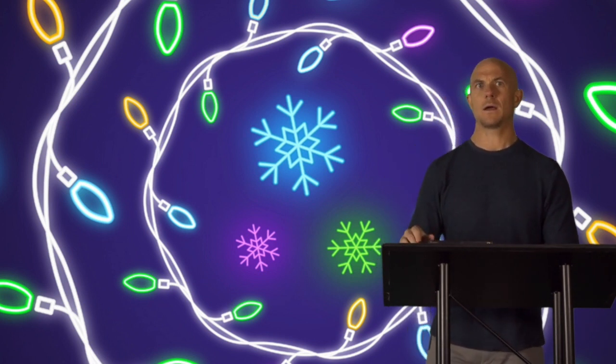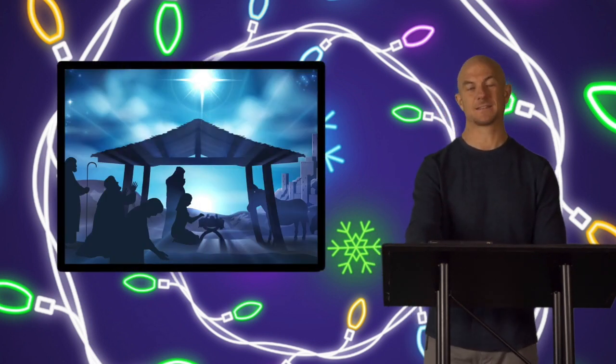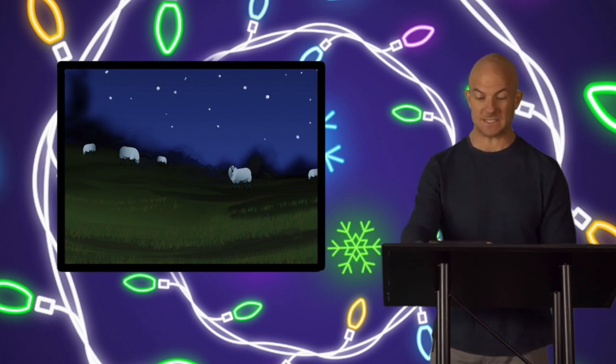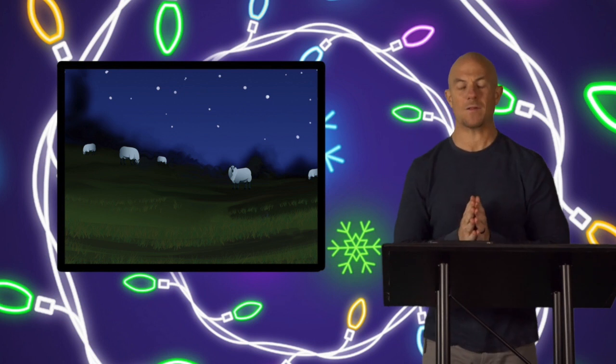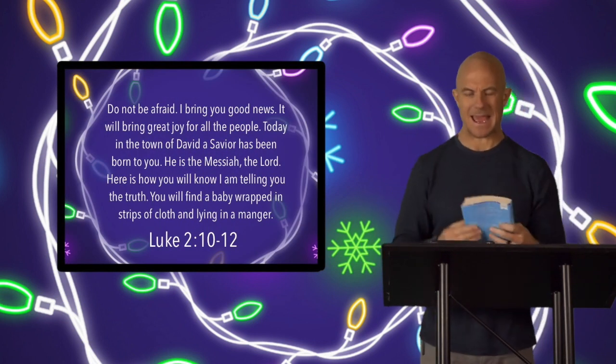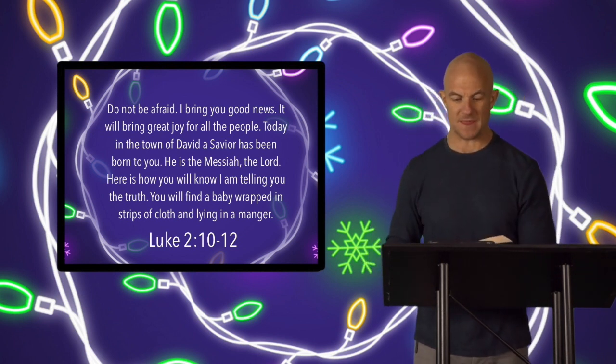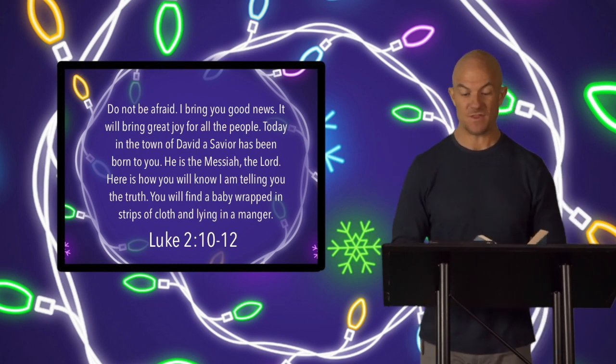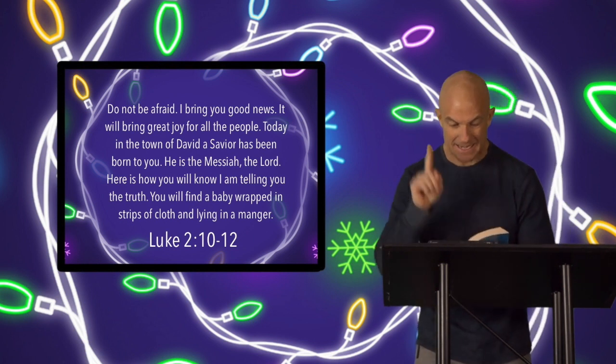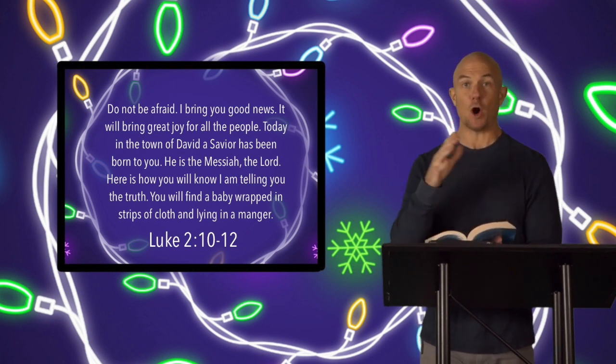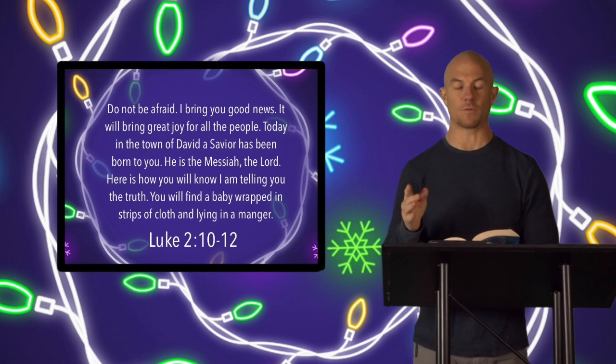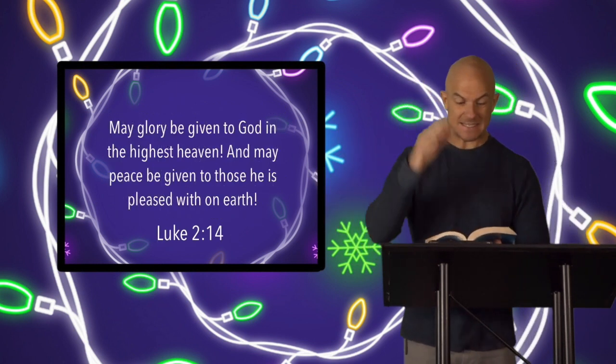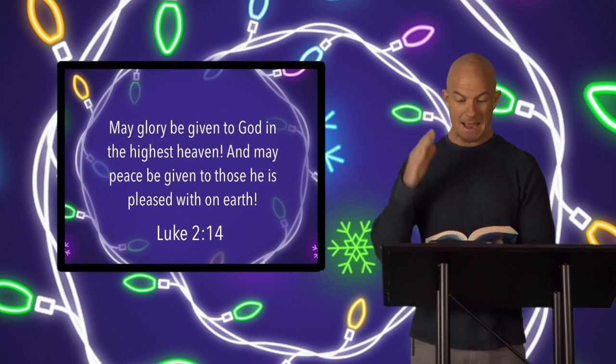While this happened, a group of shepherds were gathered in a field outside of town. And listen, it was the shepherds' job to watch over their flocks and protect them from wild animals. And suddenly something strange and amazing happened. In Luke chapter 2 verse 9, it says this: an angel of the Lord appeared to them, and the glory of the Lord shone around them, and the shepherds were terrified. But the angel said this: Do not be afraid. I bring you good news. It will bring joy to all people. Today in the town of David a Savior has been born to you. He is the Messiah, the Lord. Here is how you will know that I am telling the truth: you will find a baby wrapped in strips of cloth and lying in a manger. Then a large group of angels appeared, and they were praising God, and they said this: May glory be given to God in the highest heaven, and may peace be given to those that He is pleased with on earth.